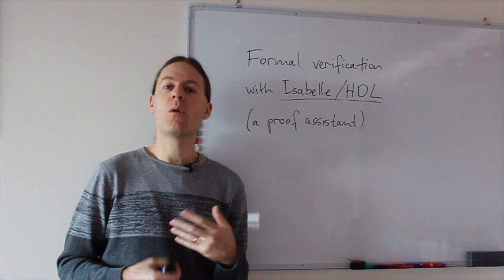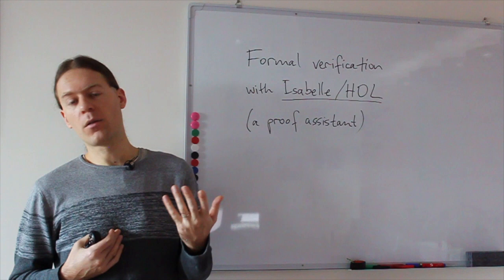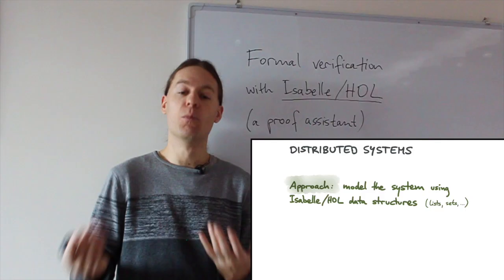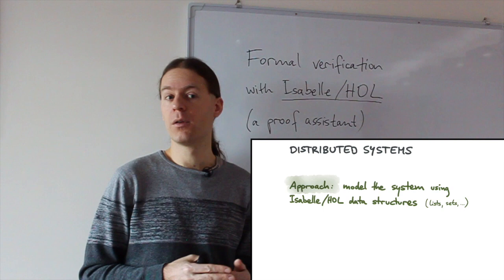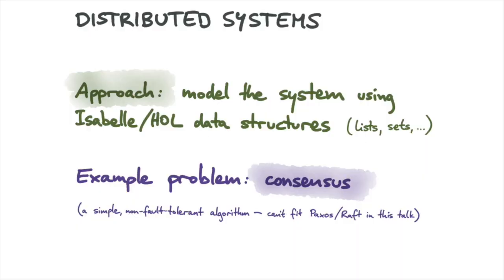We're going to talk about formal verification of distributed systems. Isabelle doesn't have built-in support for distributed systems, but that's okay because it has general purpose data structures like lists and sets. We can use those data structures to model our distributed system in just a few lines of code, using the standard data structures provided by Isabelle's standard library.